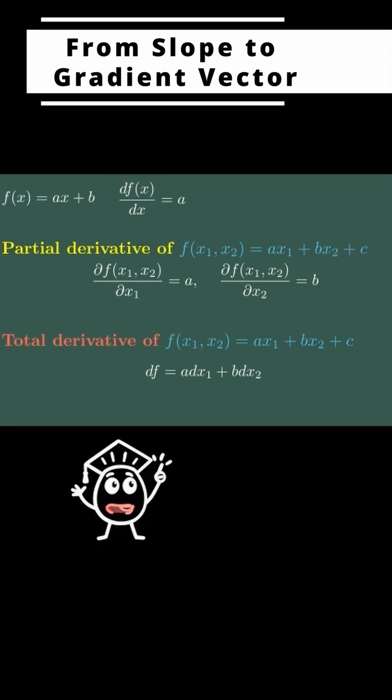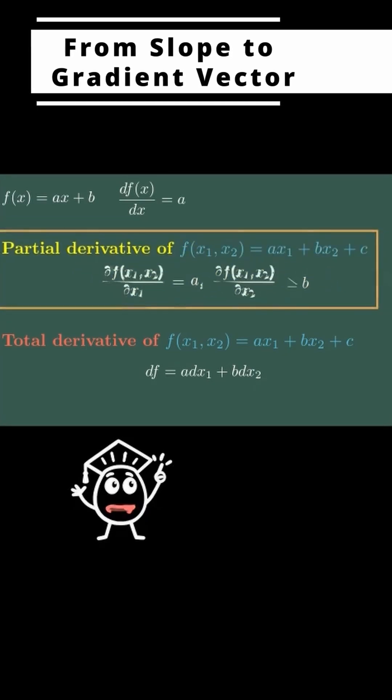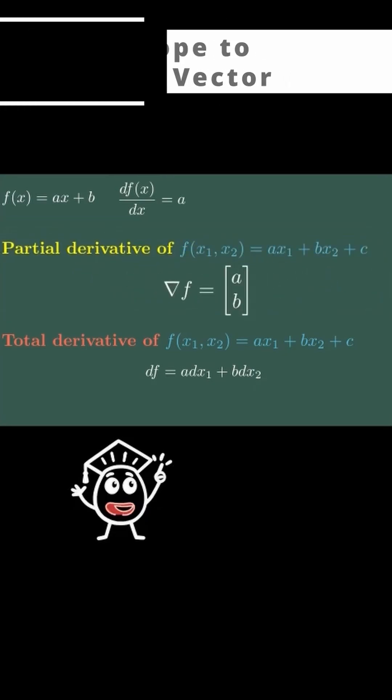So where does the gradient show up? Right here. It's the vector that collects those partials. Gradient f equals a comma b. That's the gradient.